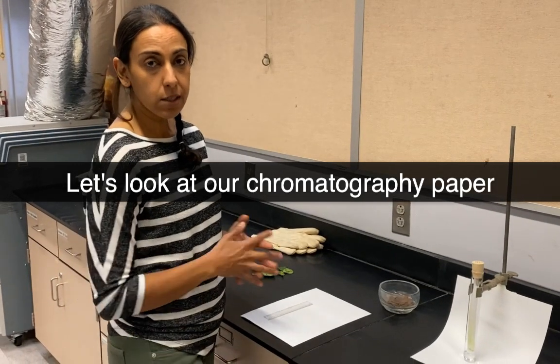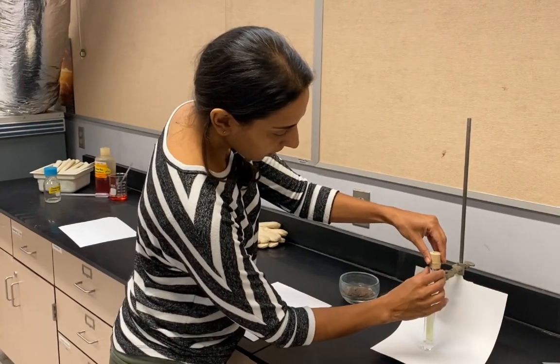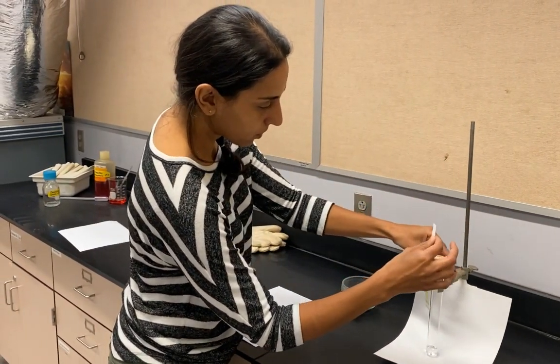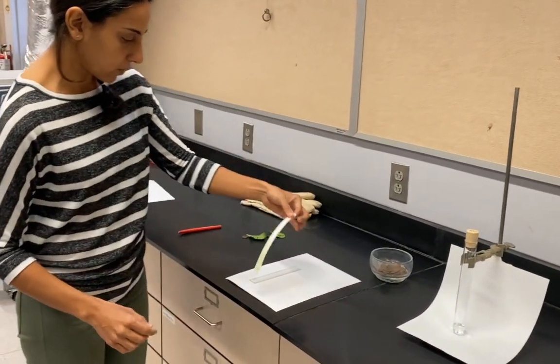All right, so we're going to look at our results for experiment two. We have our pigment here that's separated now in paper chromatography. It looks like there's a good separation there, so I'm going to bring this over here on this piece of paper.